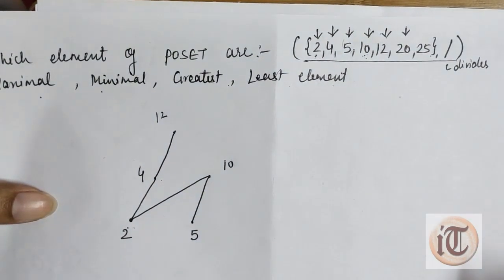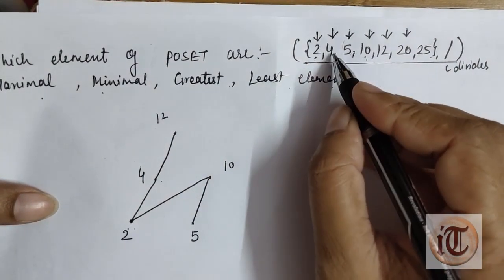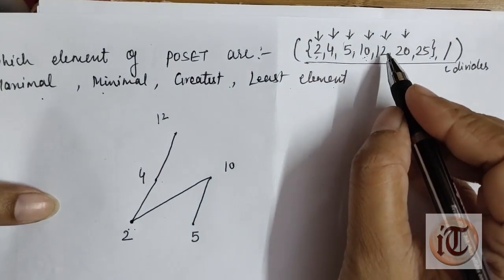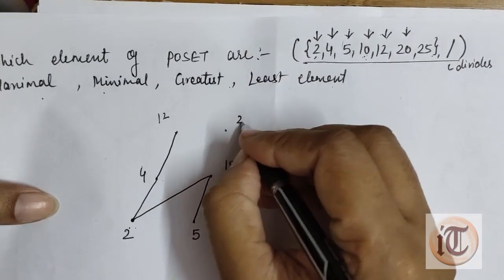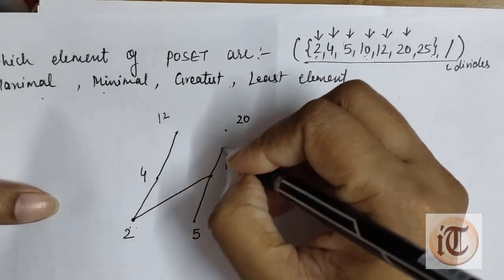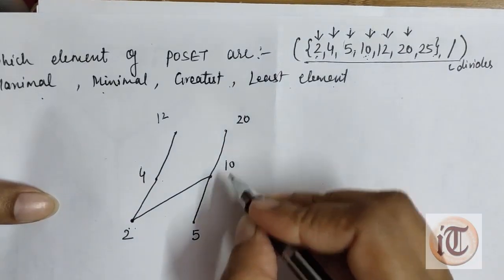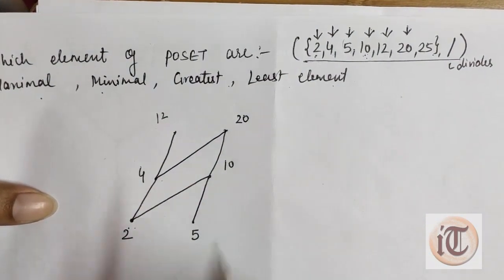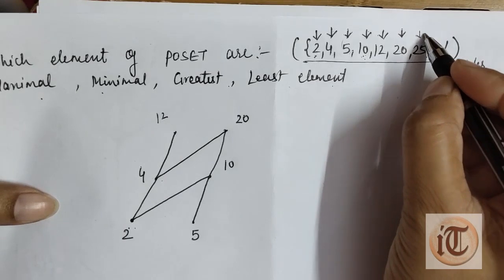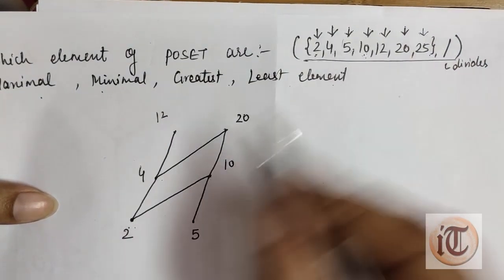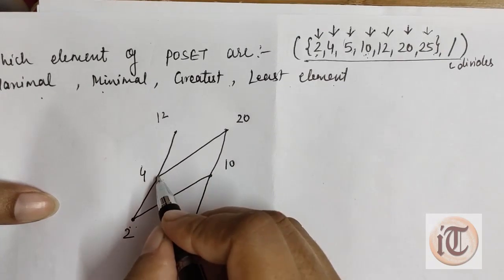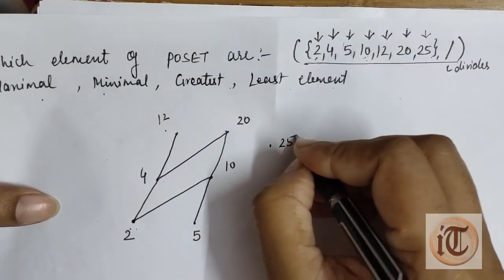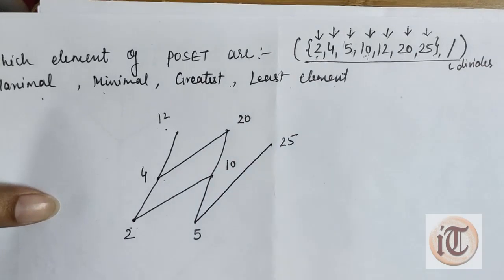The next element is 20. Is 20 divisible by 2? Yes. By 4? Yes. By 5? Yes. By 10? Yes. By 12? No. So we place 20 and connect it to 10, 5, and through them to 4 and 2. The next element is 25. Is 25 divisible by 2? No. By 5? Yes. By 4, 10, 12, or 20? No. So element 25 is only connected to 5.